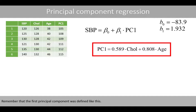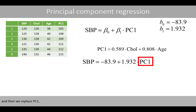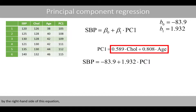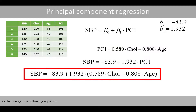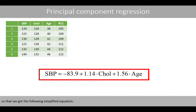Recalling that PC1 was defined by its weights, we plug our estimated parameters into the regression model and replace PC1 with the right-hand side of its defining equation. Multiplying the weights by the estimated slope gives us a simplified final equation in terms of the original variables, cholesterol level and age.